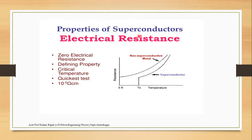The properties of a superconductor include zero electrical resistance and a critical temperature Tc. Graphically, the x-axis represents temperature and the y-axis represents resistance. A non-superconducting metal does not show the property of falling to zero resistance.